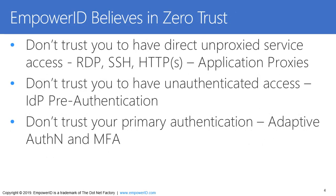EmpowerID believes in zero trust. We believe that you should never have direct, unproxied access if possible. If you need to remote desktop into a server, why have direct network connectivity if you just need access to the server desktop? The same goes for SSH, and the same goes for web applications — HTTPS. Why expose the full network connectivity when you only need specific access?